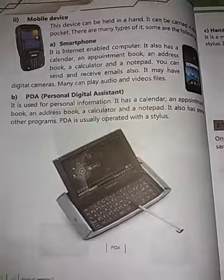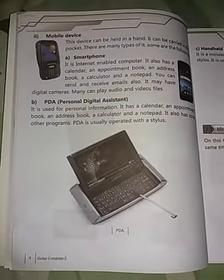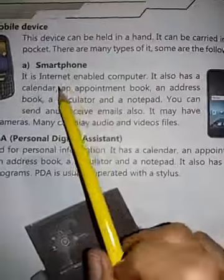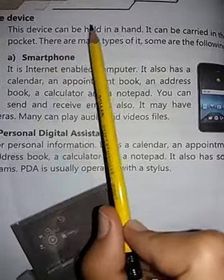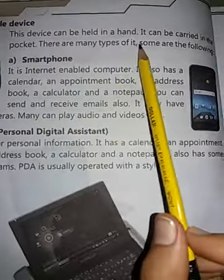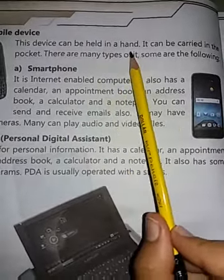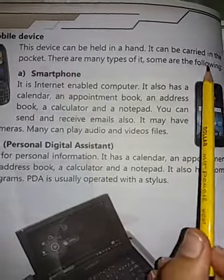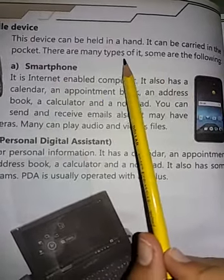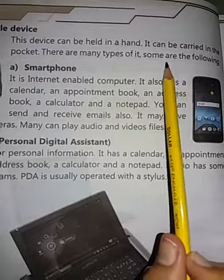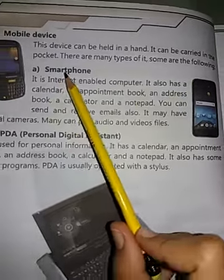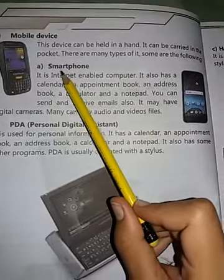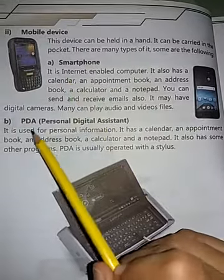Page number 8 پر mobile devices ہیں۔ This device can be held in a hand — اس کو ہم ہاتھ میں hold کر سکتے ہیں۔ It can be carried in the pocket — pocket میں بھی رکھ سکتے ہیں۔ Mobile devices کی تین types ہیں۔